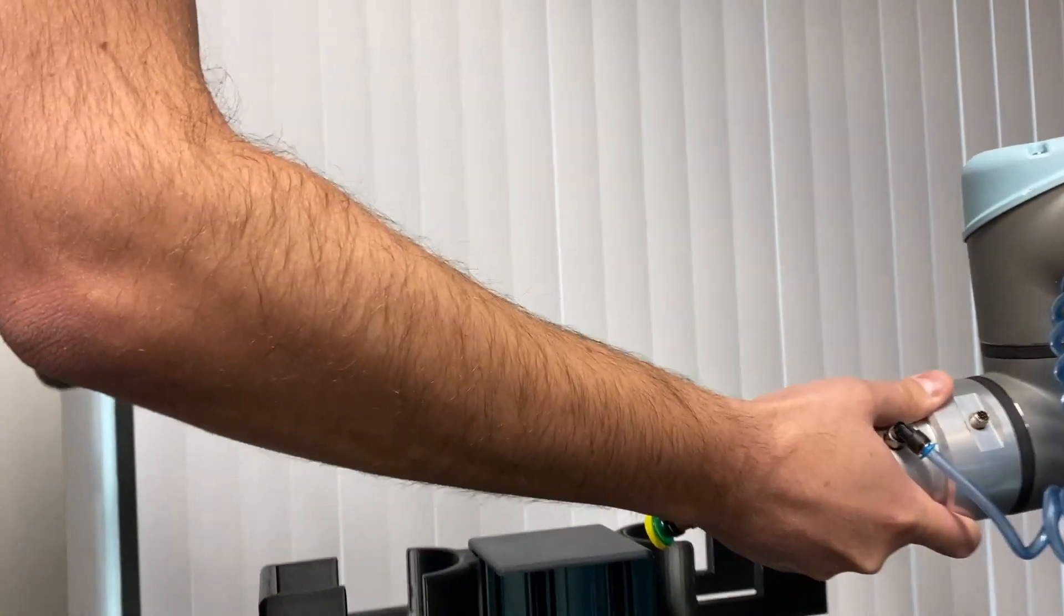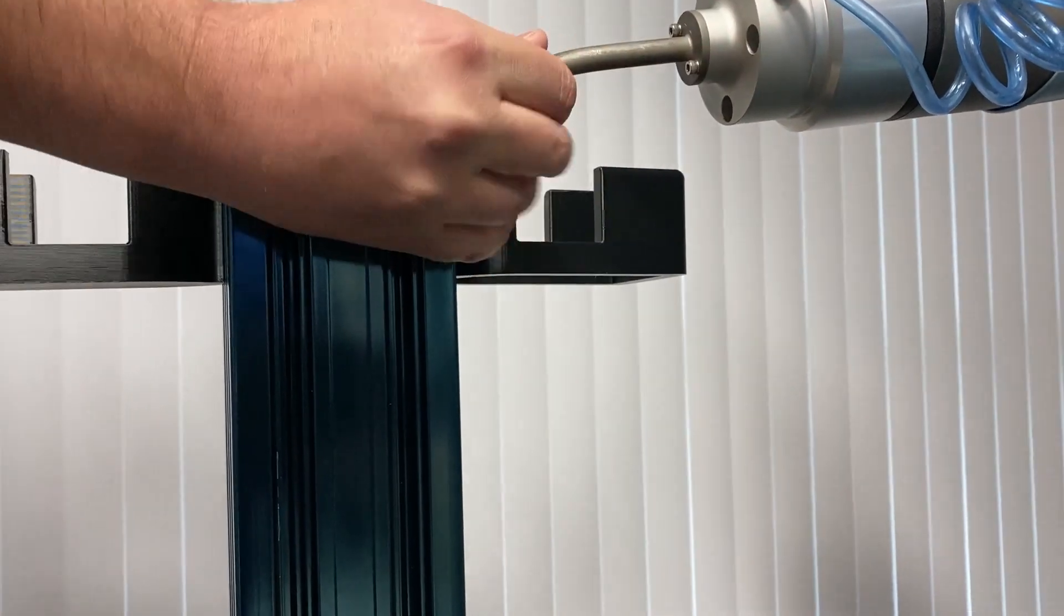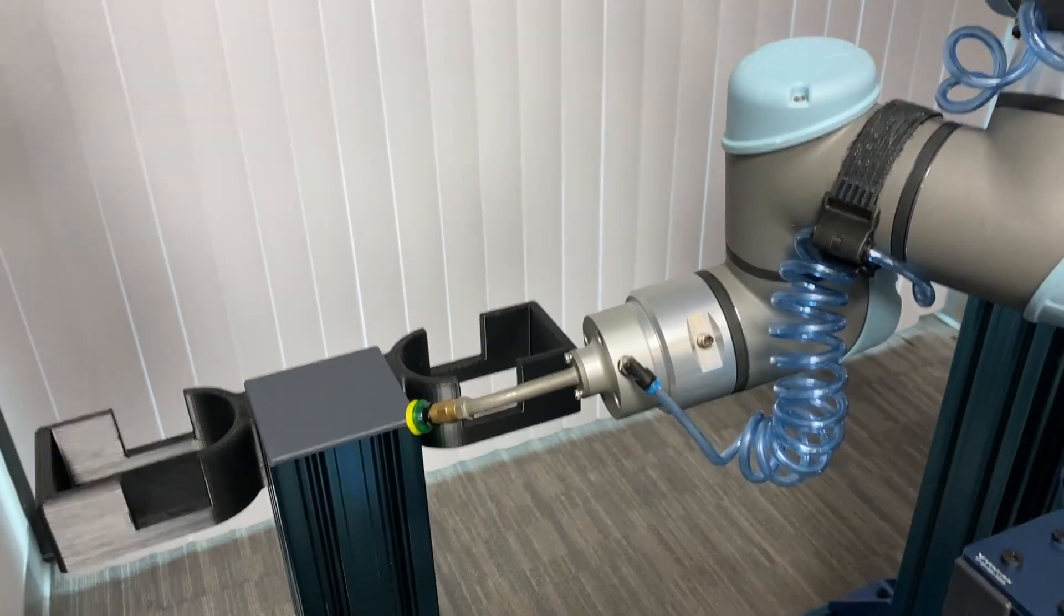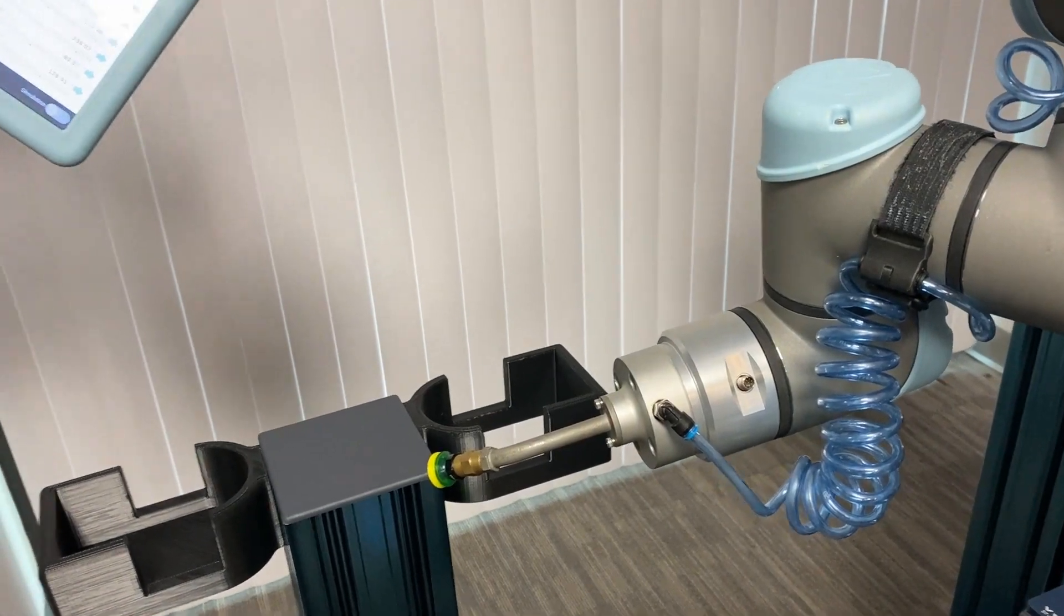So we'll just grab the robot and point it right at that corner right there, and we're going to hit set point one.